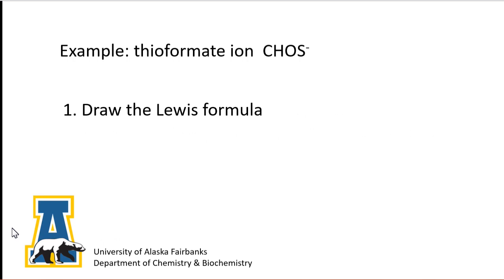We will use thioformate ion, CHOS-, as an example in these videos. To draw the Lewis formula, note that this ion contains 18 valence electrons: 17 from the neutral atoms plus 1 from the negative charge.